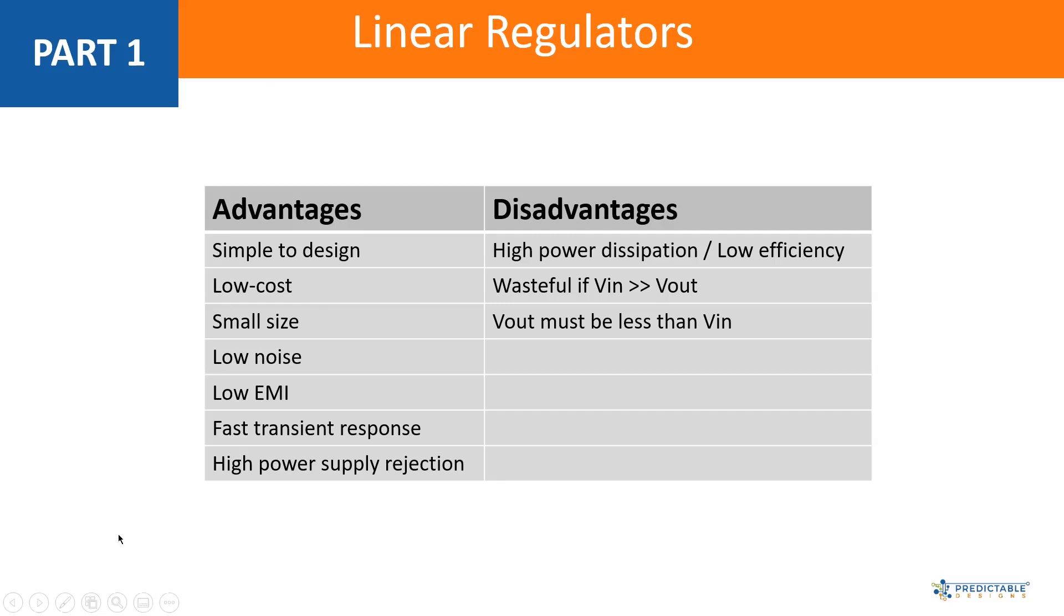And then finally, a linear regulator has a very fast transient response time compared to a switching regulator. So if the output load is going to increase really quickly, let's say you've got some type of pulse load where it's pulsing between 10 milliamps and one amp, and you want the output to not have any glitches on the voltage or anything like that, then that would be a fast transient response, and a linear regulator is going to be best for that type of application.